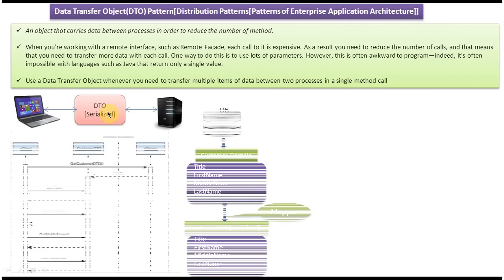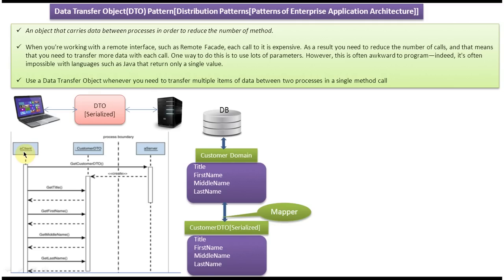We will see one more example. Here you can see a client, a customer DTO, and a server. Suppose the client wants the customer information from the server. The client will request the customer DTO from the server. The server will then communicate to the database, hit the customer table, and get all the customer details to populate the customer domain object with title, first name, middle name, and last name.